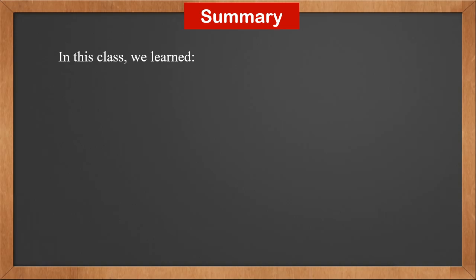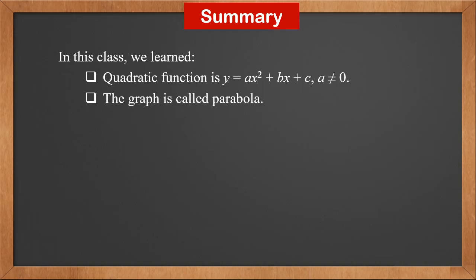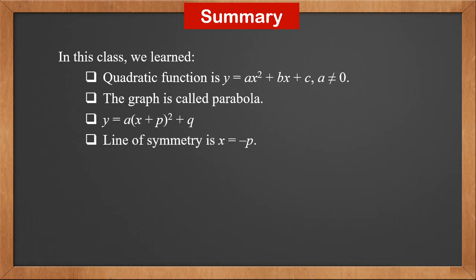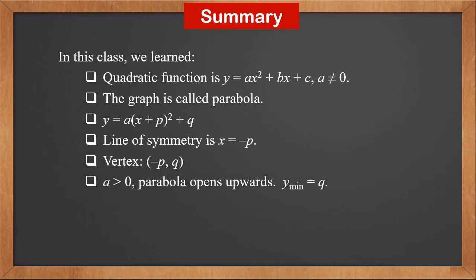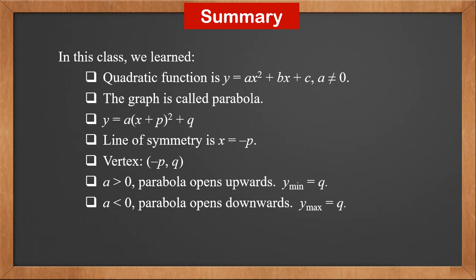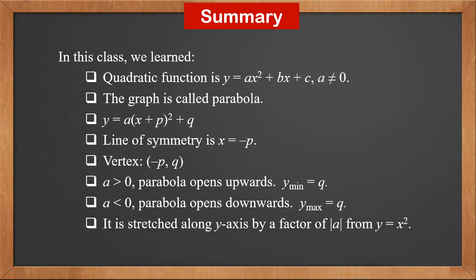In this class, we learned: a quadratic function is y equals ax squared plus bx plus c. The graph is called a parabola. For y equals a times (x plus p) squared plus q, the line of symmetry is x equals minus p, and the vertex is (minus p, q). If a is positive, the parabola opens upwards and there's a minimum y value q. If a is negative, the parabola opens downwards and there's a maximum y value q. It is stretched along the y axis by a factor of a's modulus from y equals x squared.